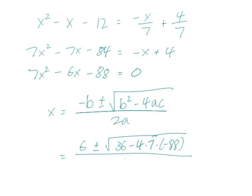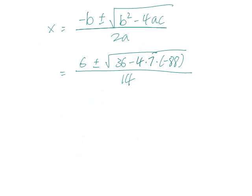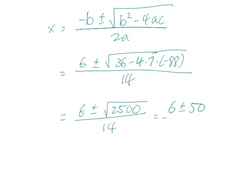And I shouldn't actually be writing 2a, because a is 7, so this is 14. And if you do the math out, this is going to be equal to 6 plus or minus square root of 2,500 over 14, or 6 plus or minus 50 over 14.